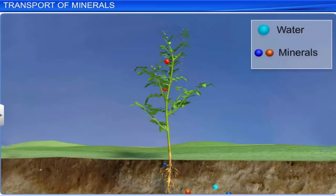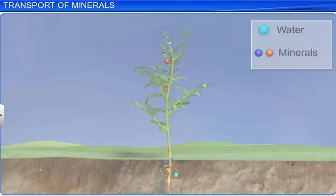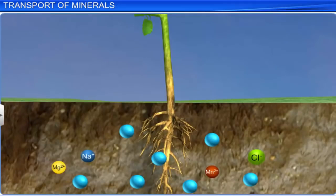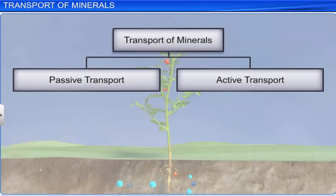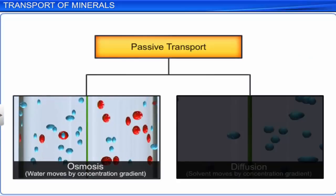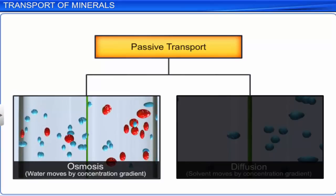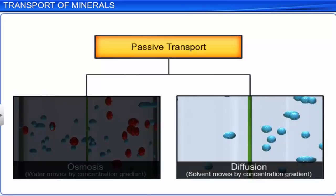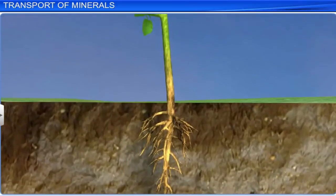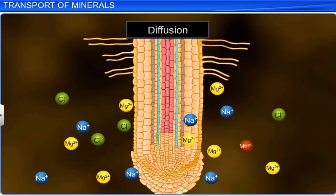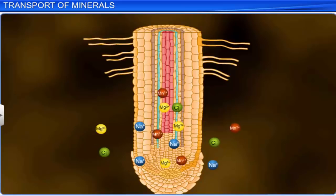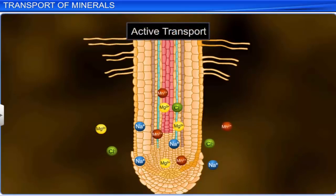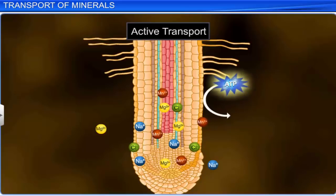Along with water, plants absorb essential nutrients and minerals from the soil. These minerals are present in the soil as charged particles called ions. Absorption of minerals by plant roots occurs through both passive and active transport. In passive transport, the ions do not require energy and just pass through the cell membrane by osmosis or diffusion. Mineral ions move into the root by diffusion whenever the mineral concentration is higher outside the root. On the other hand, active transport takes place when there is higher mineral concentration inside the roots than outside. Since the ions now move against the concentration gradient, they require energy to cross the cell membrane.